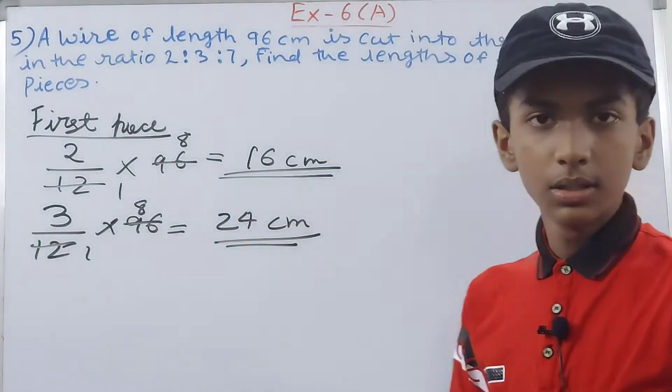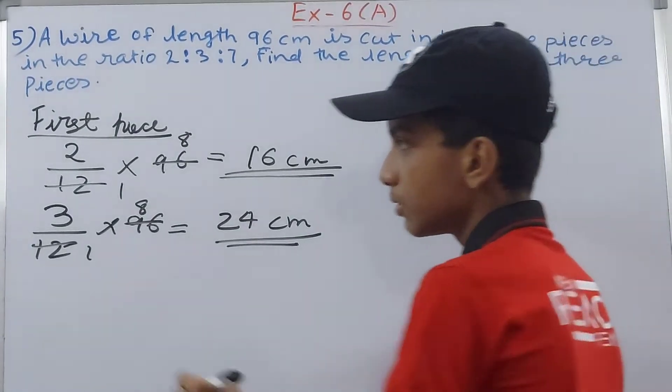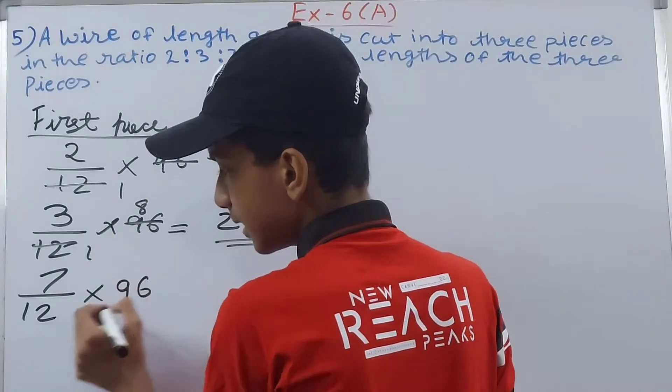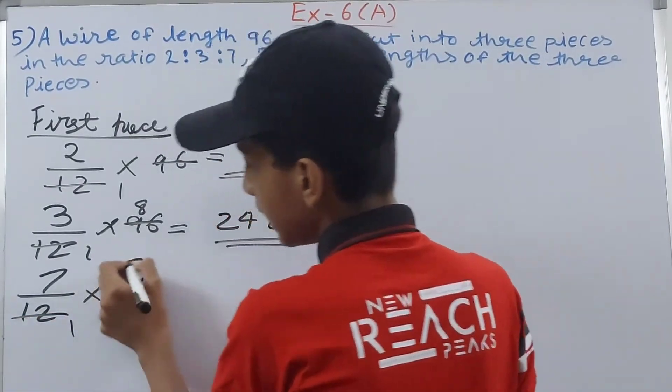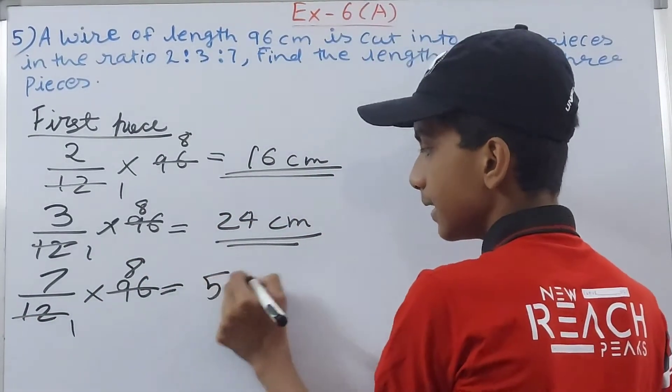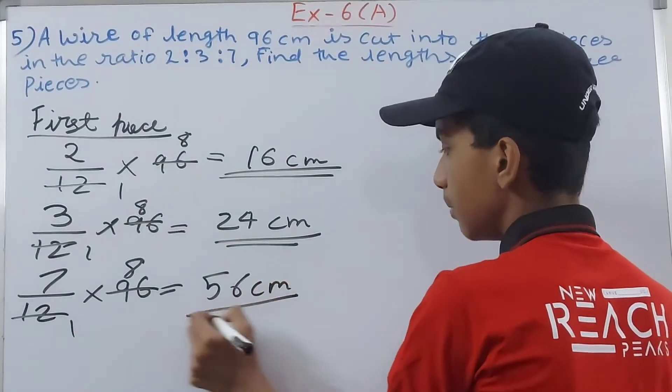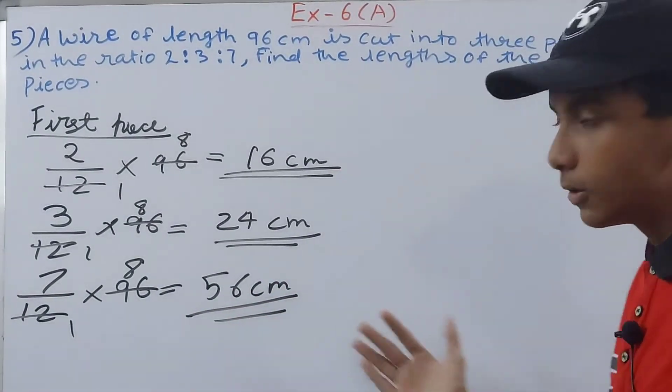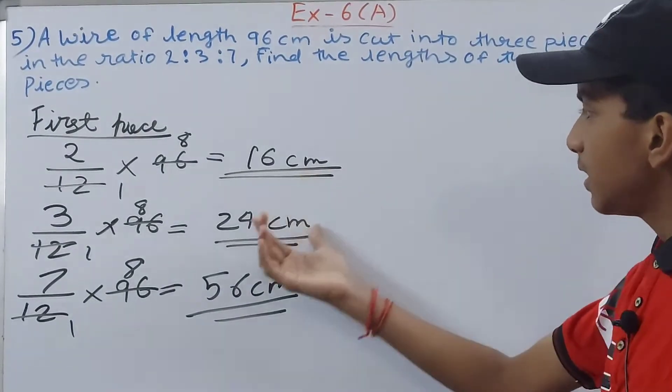Then last one is 7. So 7 upon 12 into 96. 1 and 8, 8 times 7 is 56 centimeters. And we have found out the length of all three pieces: one is 16, the other is 24, and the other is 56.